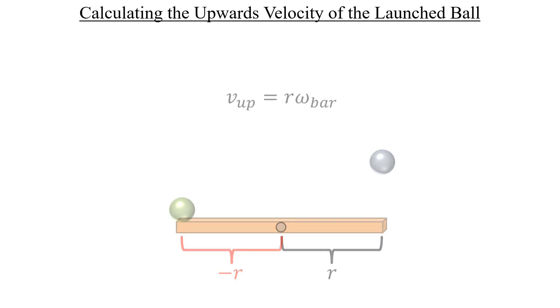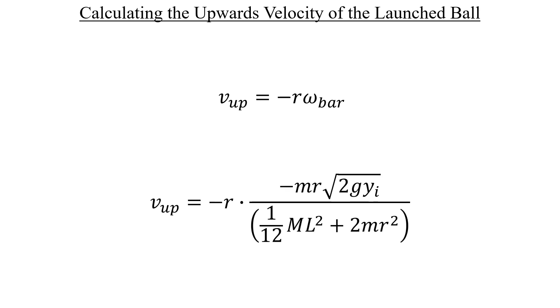Once we take care of that, we can plug in the value of omega_bar from stage three. Here you can see that the negative signs in that product cancel each other out and we get a positive upwards velocity as expected. Before we continue, let's simplify that ratio over on the right and absorb the outer r into the numerator like this.